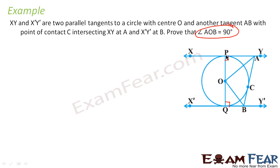Since there is a tangent from point A, the two tangent segments from A are equal, making the two angles at A equal — call each angle X. Similarly, from point B drawing two tangents BQ and BC, the angles at B are equal — call each angle Y.